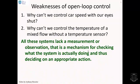The weaknesses of open-loop control: why can't we control car speed with our eyes shut? Why can't we control the temperature of a mixed flow without a temperature sensor? All these systems lack a measurement or observation. That is, a mechanism for checking what the system is actually doing and thus deciding on an appropriate action.